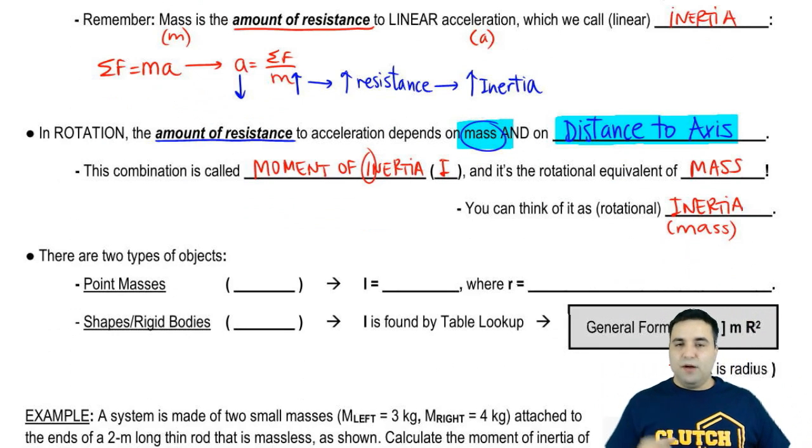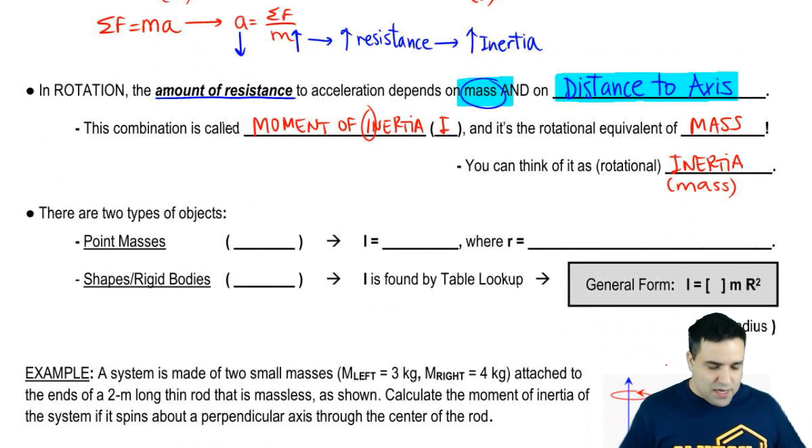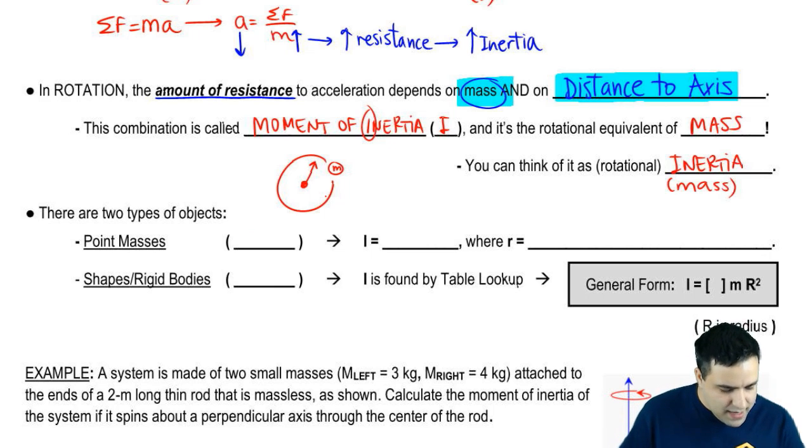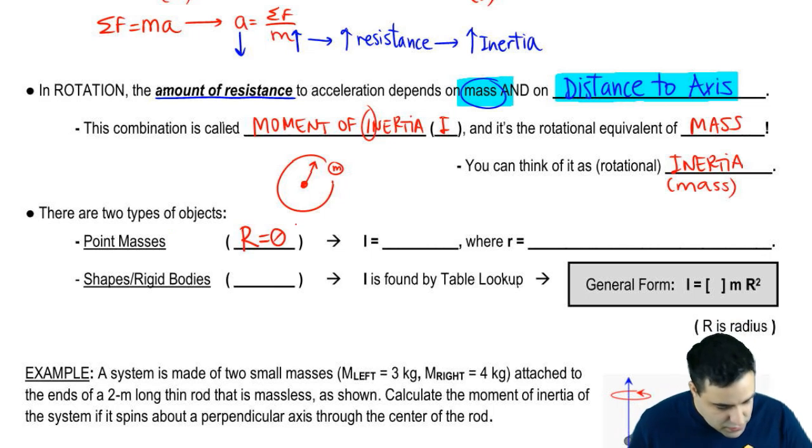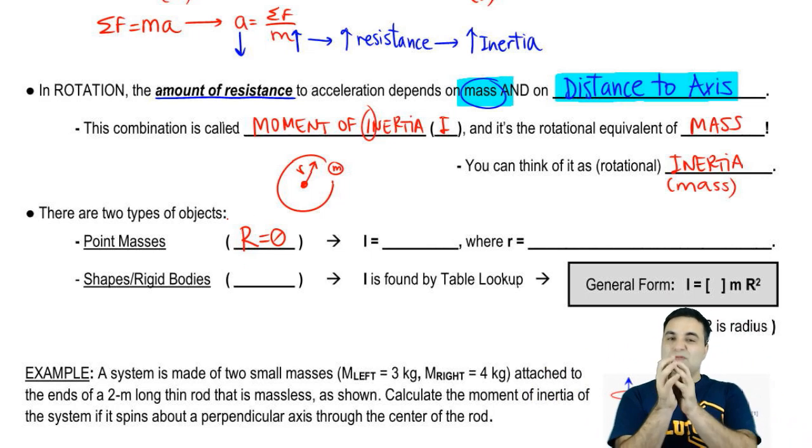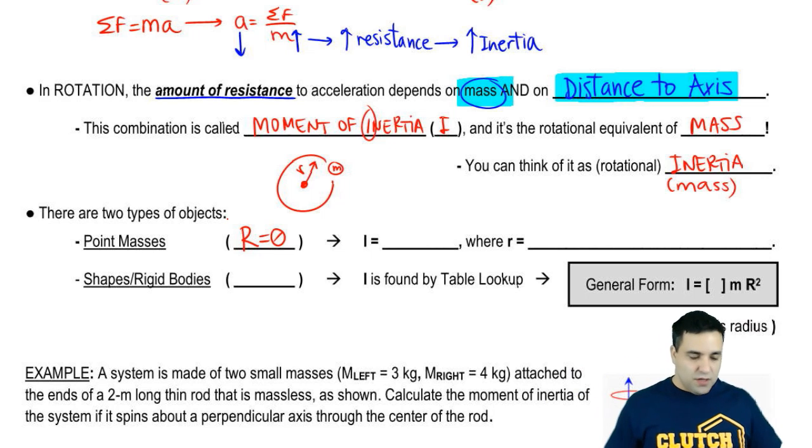So there's two types of objects and two types of problems you're going to see. You can have point masses. Again, a point mass is a tiny little object that goes around a circle of radius r. And we're going to say that the mass itself has no radius. So remember, this distance here is little r. Little r is a distance. Big R is the radius. So it's a tiny object that doesn't really have a radius. It doesn't have a volume. Usually, you hear something like a small object.